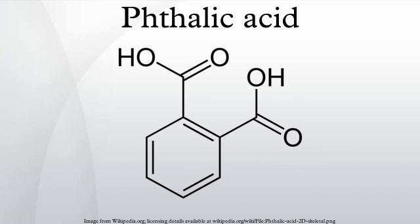Isomers: Phthalic acid is one of three isomers of benzene-dicarboxylic acid, the others being isophthalic acid and terephthalic acid. Sometimes the term phthalic acids is used to refer to this family of isomers, but in the singular, phthalic acid refers exclusively to the ortho isomer.